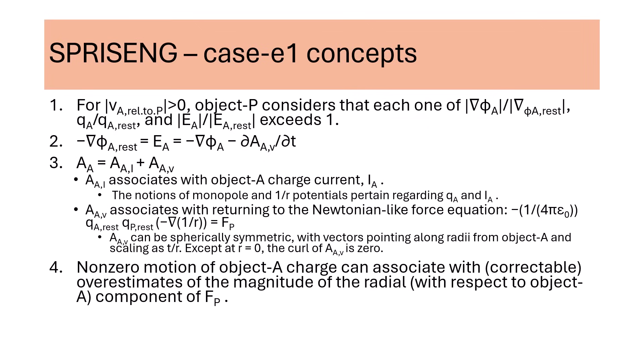KC1 suggests that one can revert some aspects of special relativistic electromagnetism toward a Newtonian-like force law. The key is to add a new component, H_{A,V}, to the vector potential. The new component can have zero curl and therefore not contribute to the magnetic field that associates with object A. In effect, the reversion detracts from the radial aspects of the scalar potential phi_A that associates with special relativistic electromagnetism. Each of phi_A, H_{A,I}, H_{A,V}, and H_A associates with monopole effects. Here, monopole effects detract from monopole effects.